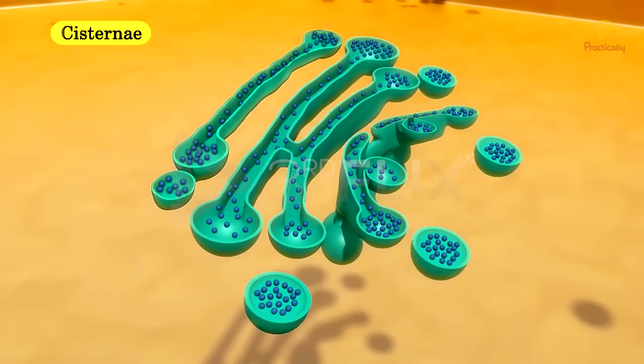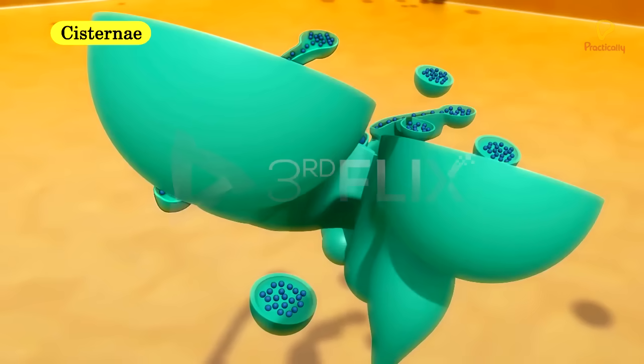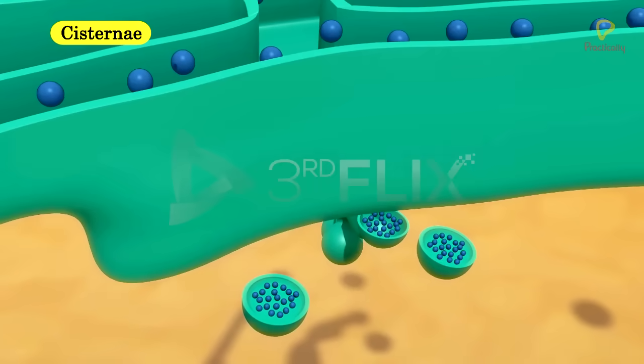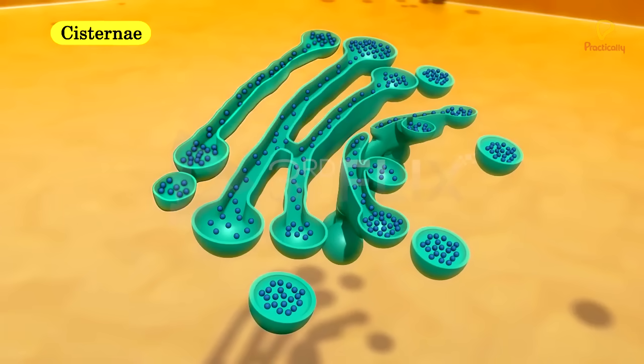Cisternae are flat, disc-shaped sacs with swollen ends. They are curved, parallelly arranged, and smooth membraned sacs. Golgi complex is a polarised cell organelle.